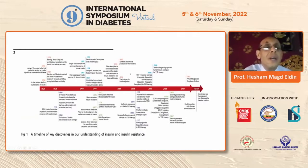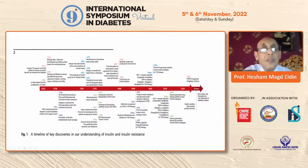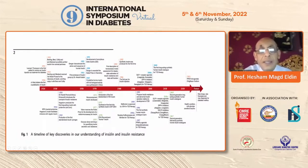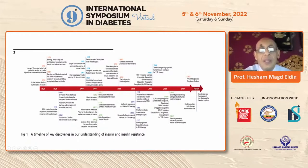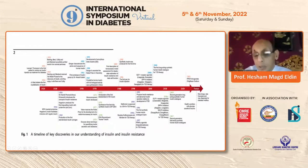Here we can see that since 1921, when animal insulin was first produced from animal pancreas, up until 1936 when the concept of insulin resistance was first introduced, and then in 1979 the glucose clamp technique was introduced by DeFronzo and others to measure insulin resistance. In 1985 the concept of the homeostasis model was introduced, and until now we are striving to understand more about diabetes pathology, pathophysiology, and treatment.